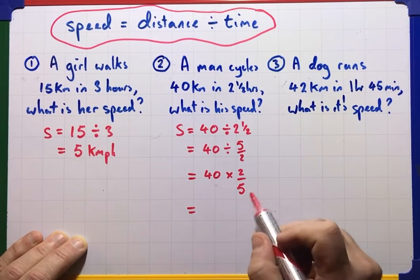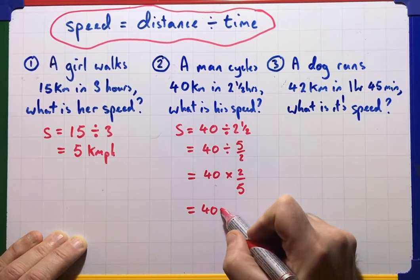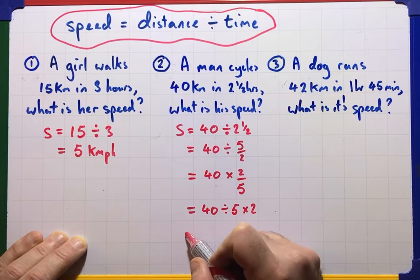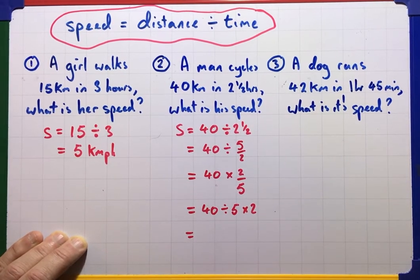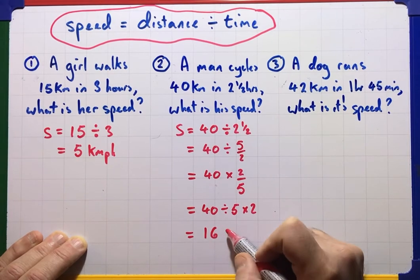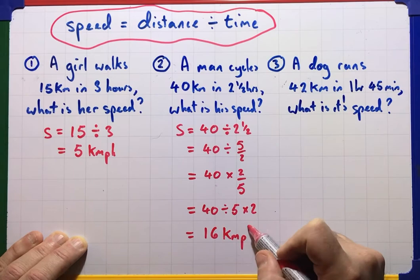So in this case, it's going to be 40 divided by the bottom, multiplied by the top. So 40 divided by 5 is 8, times 2 is 16. So 16, and again, this one is kilometres per hour.